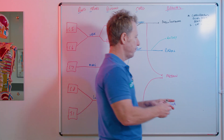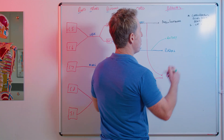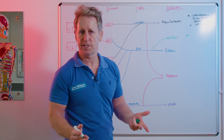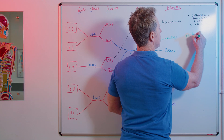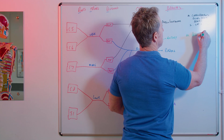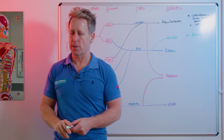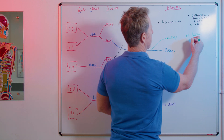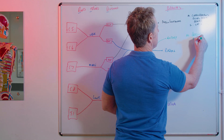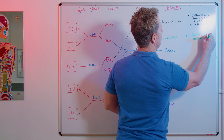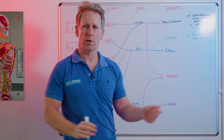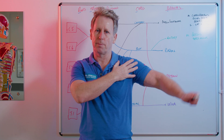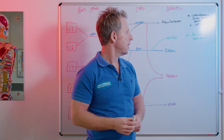Now the axillary nerve. The motor supply will be to the deltoid muscle and also to a smaller muscle at the back called teres minor. The deltoid's anterior fibers flex, the mid fibers abduct, and the posterior fibers extend and externally rotate. Teres minor is basically an external rotator.